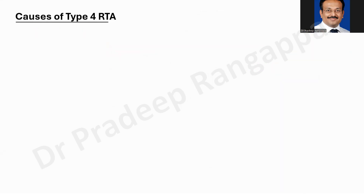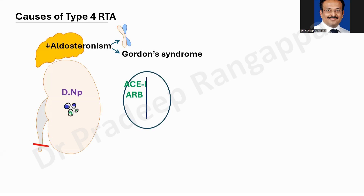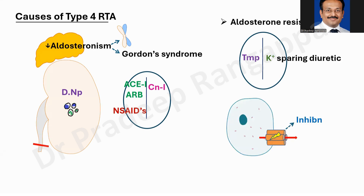Causes of type 4 RTA include: hypoaldosteronism — which can be genetic, Gordon syndrome, diabetic nephropathy, glomerulonephritis, or obstructive uropathy (commonly seen in ICU). Medications include ACE inhibitors, ARBs, calcineurin inhibitors like cyclosporine, and NSAIDs. Aldosterone antagonists like trimethoprim, potassium-sparing diuretics, and sodium channel abnormalities or voltage-gated channel deficiencies are also causes. Obstructive uropathy is commonly encountered in ICU patients.